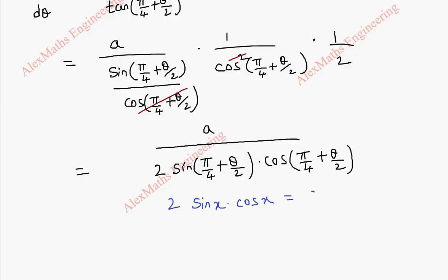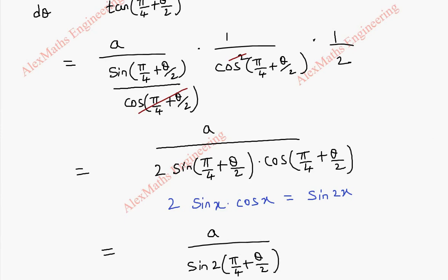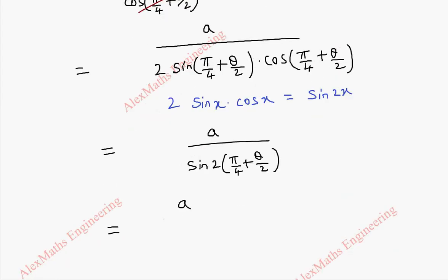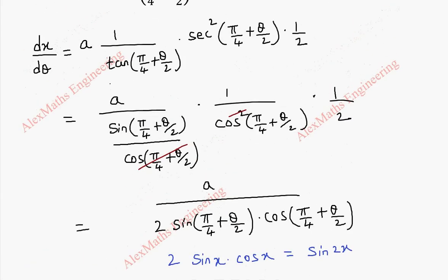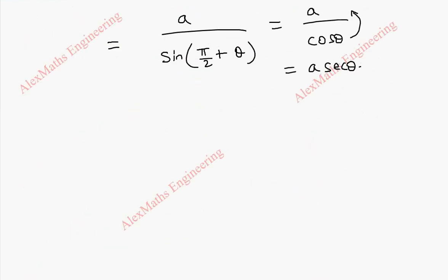The formula is sin 2x. So by applying this formula, we get a by sin 2 times of x, where x is π/4 + θ/2. When we multiply this 2 inside, we get a by sin(2·π/4 + 2·θ/2), which is π/2 + θ. Sin(90° + θ) is cos θ, so a by cos θ. Since 1 by cos θ is secant θ, we got dx/dθ as a secant θ.